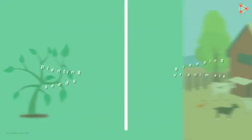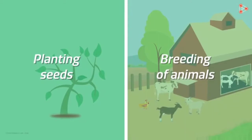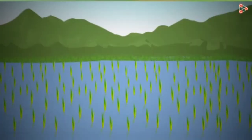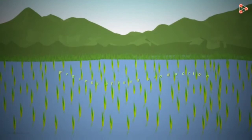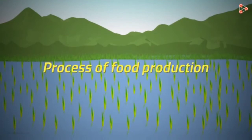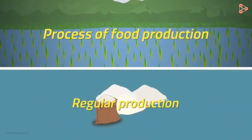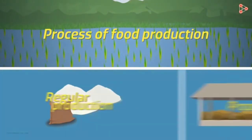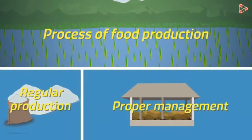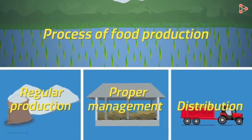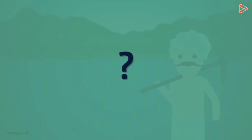What do we mean by producing food? Are planting seeds and breeding of animals the only events in food production? Of course not! A lot of effort goes into the process. This includes regular production of food, proper management of the resources produced, and fair distribution among the people.